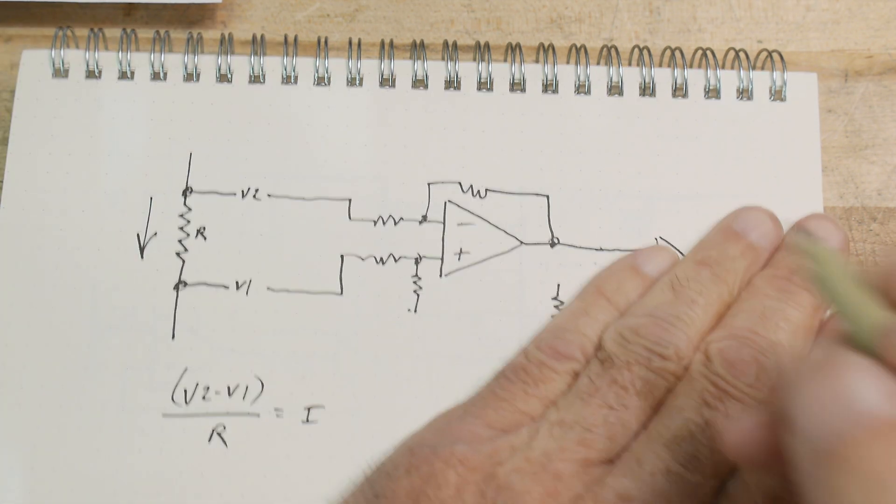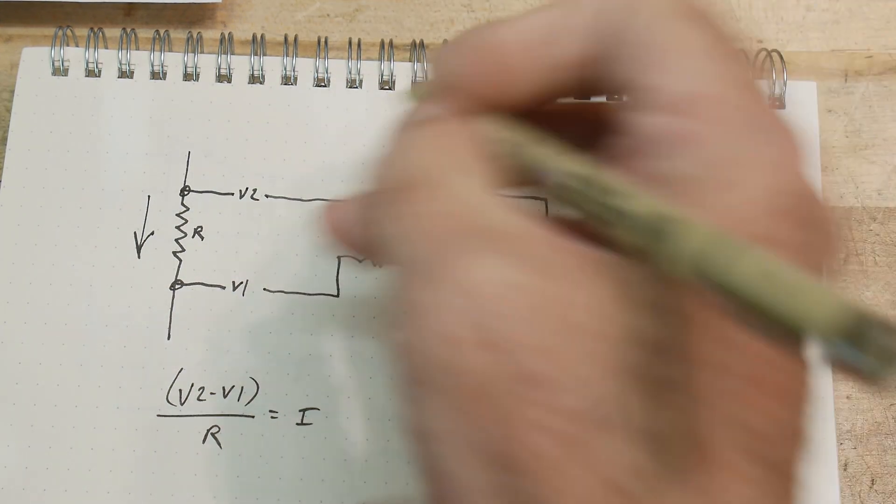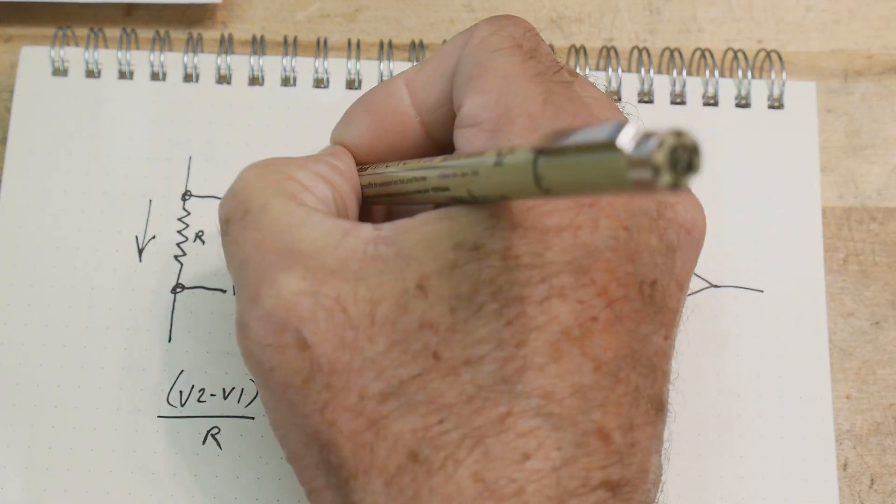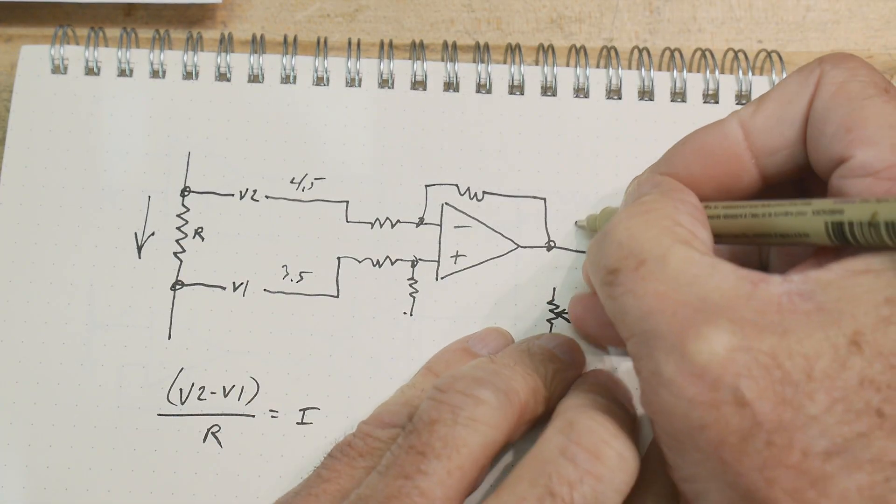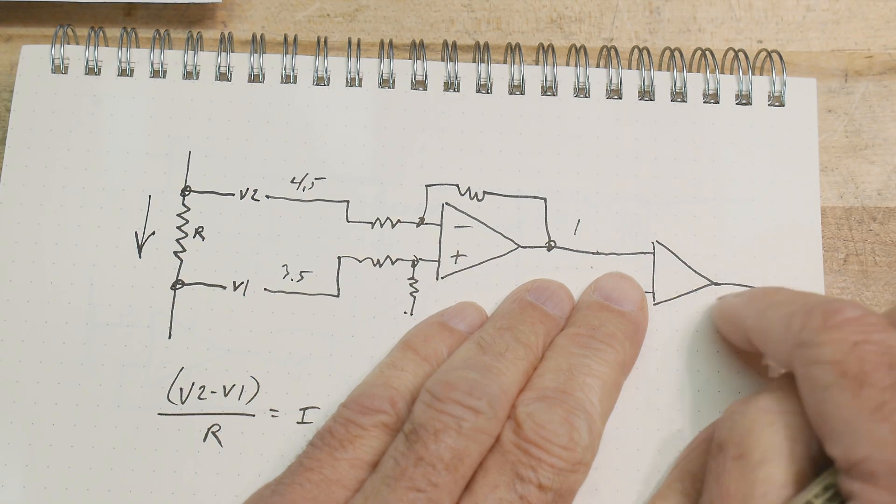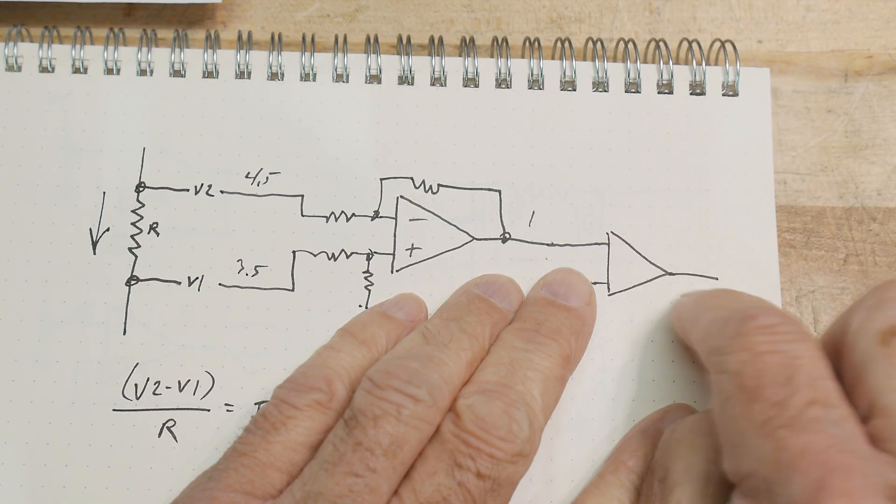And so once we have our voltage here, let's say this is then, let's just give some examples here. Let's say this is 4.5 volts and this is 3.5 volts, then this would end up being 1 volt. And then we want to have a comparator that says, are we bigger than 1 volt or are we less than 1 volt, right?